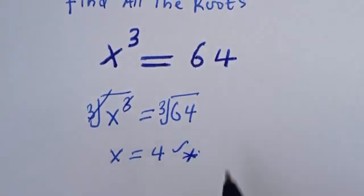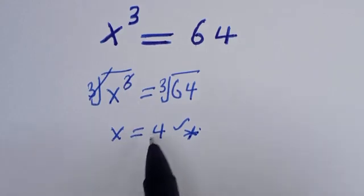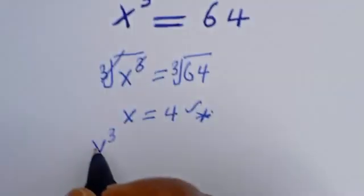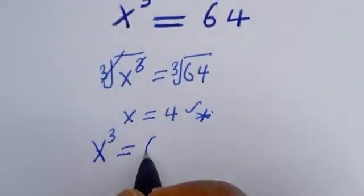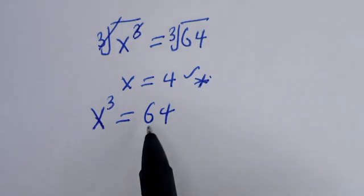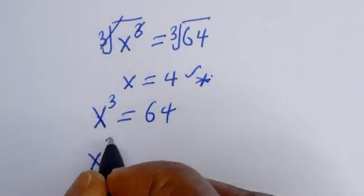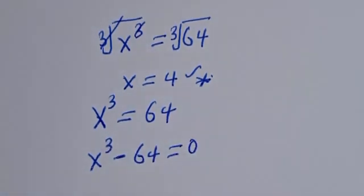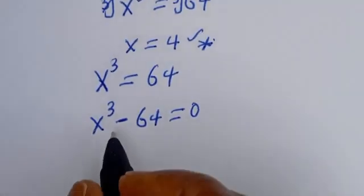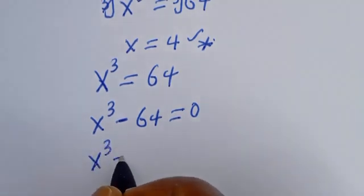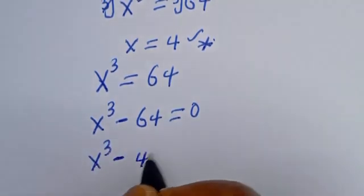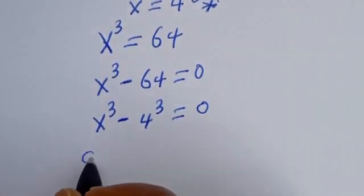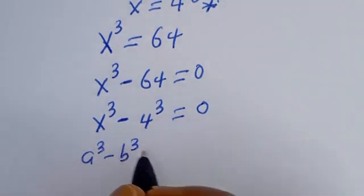Let's find all the roots of this equation. We have s³ equal to 64. Moving everything to one side: s³ minus 64 equals zero. Since 64 is 4³, this becomes s³ minus 4³ equals zero.